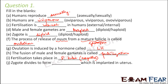Zygote divides to form — which is implanted in the uterus? The zygote initially divides to form blastomeres, then it forms the morula, and finally it forms the blastocyst, and the blastocyst gets implanted in the uterus. So the answer is blastocyst.